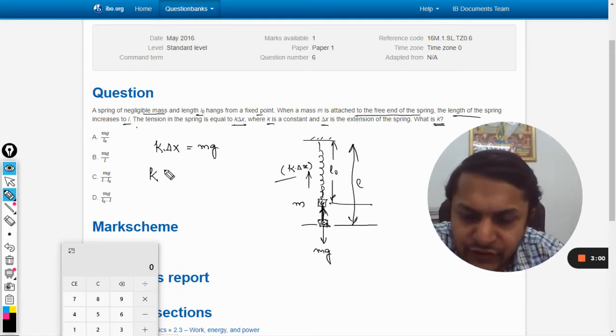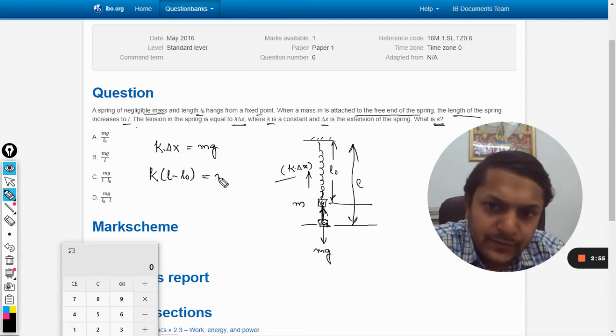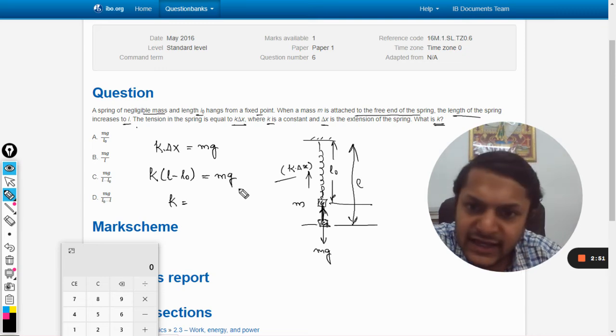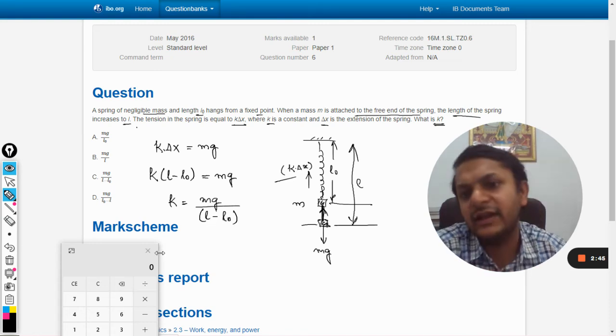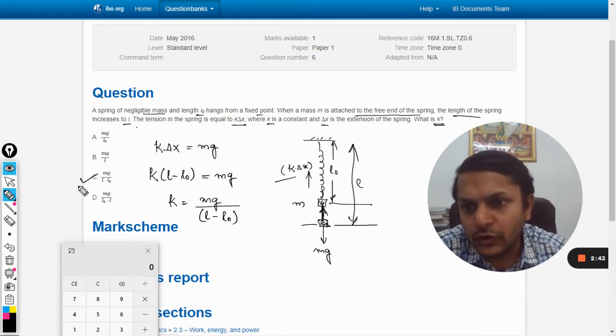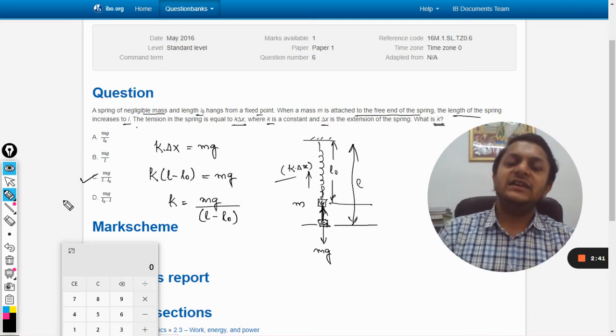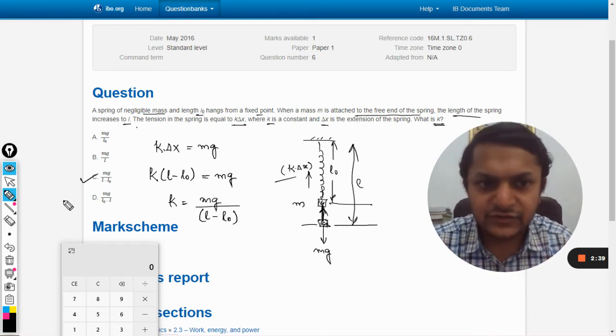What is the true value of delta x? Now it can be taken as L minus L0 equals mg. Hence k is equal to mg divided by L minus L0. So from there we get c as the right answer. Let us verify that from the mark scheme.